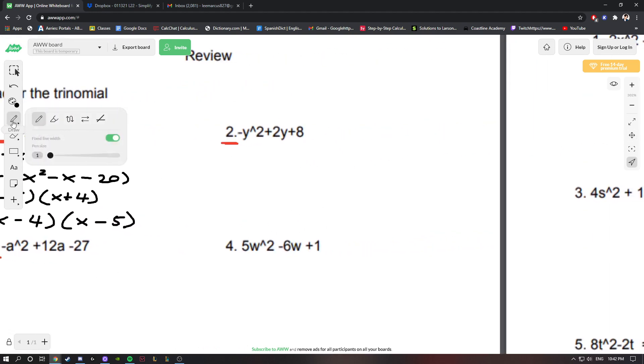Moving on, we have -y² + 2y + 8. Again, I like factoring out this negative, so we have negative on the outside: y² - 2y - 8.